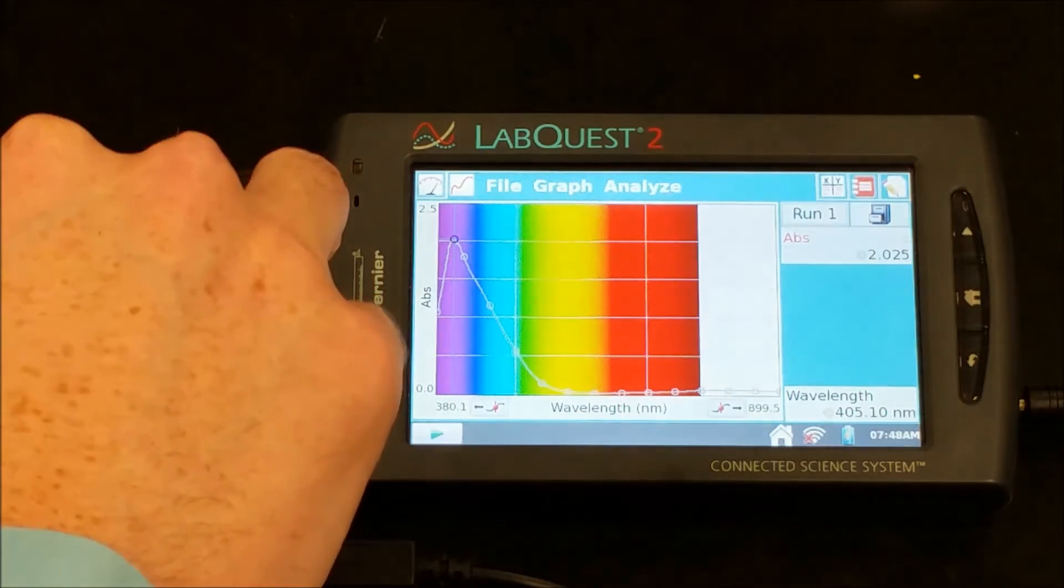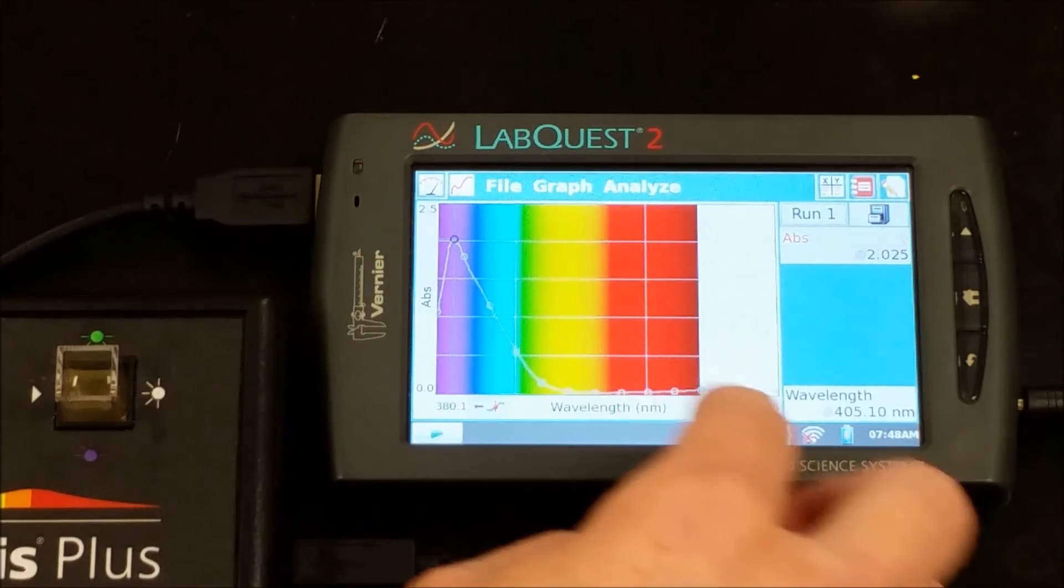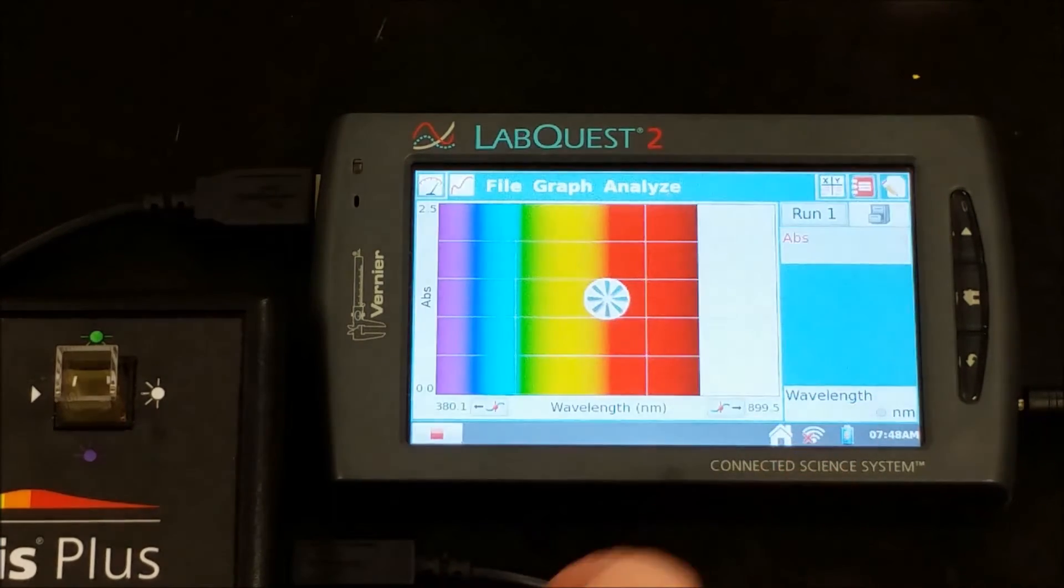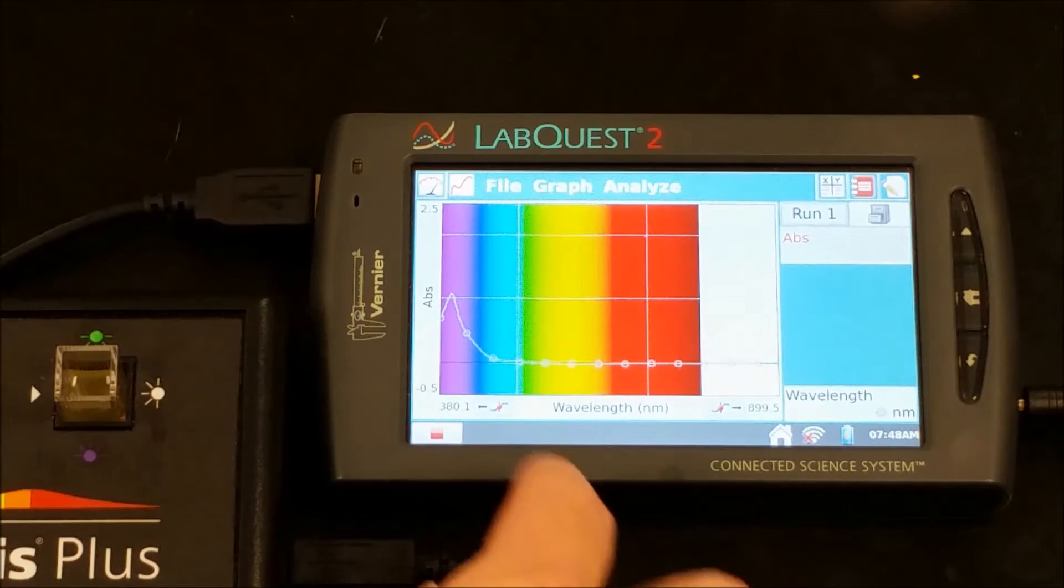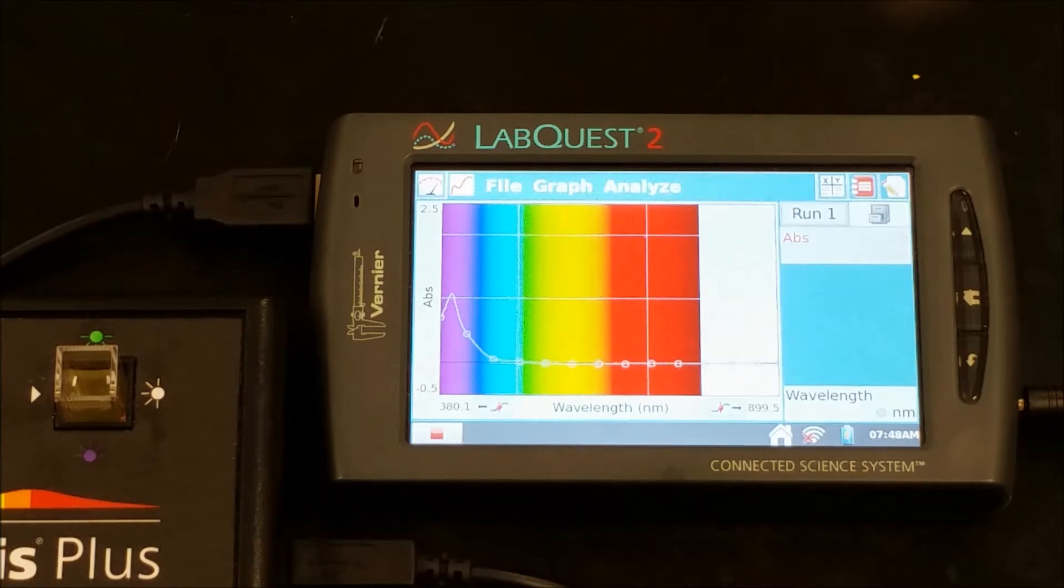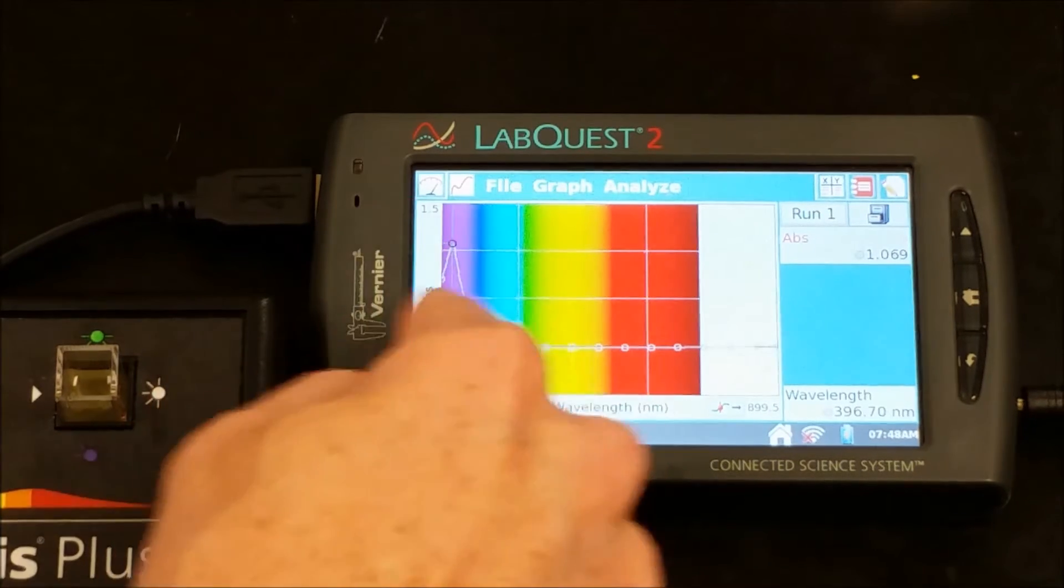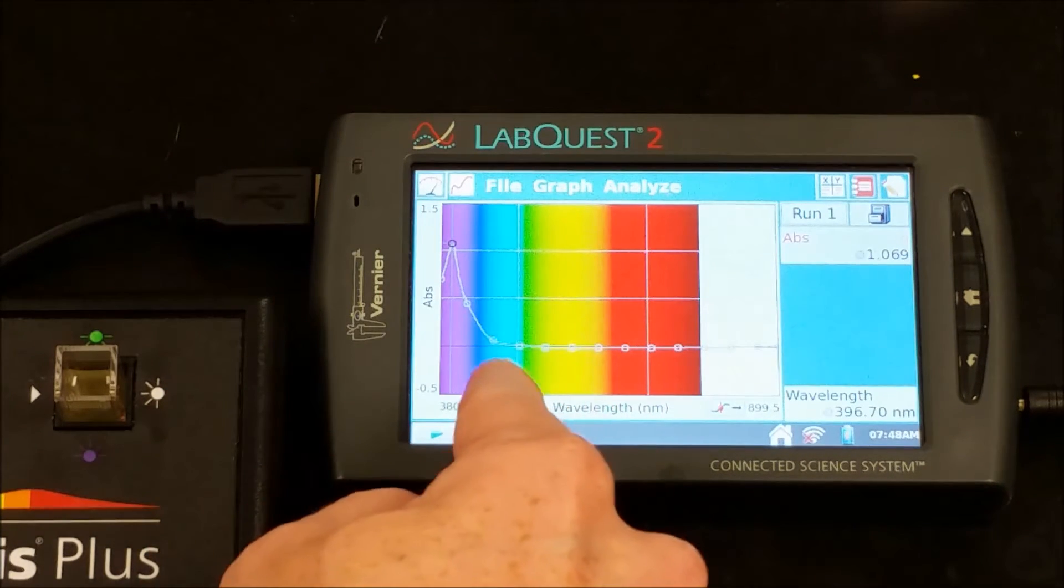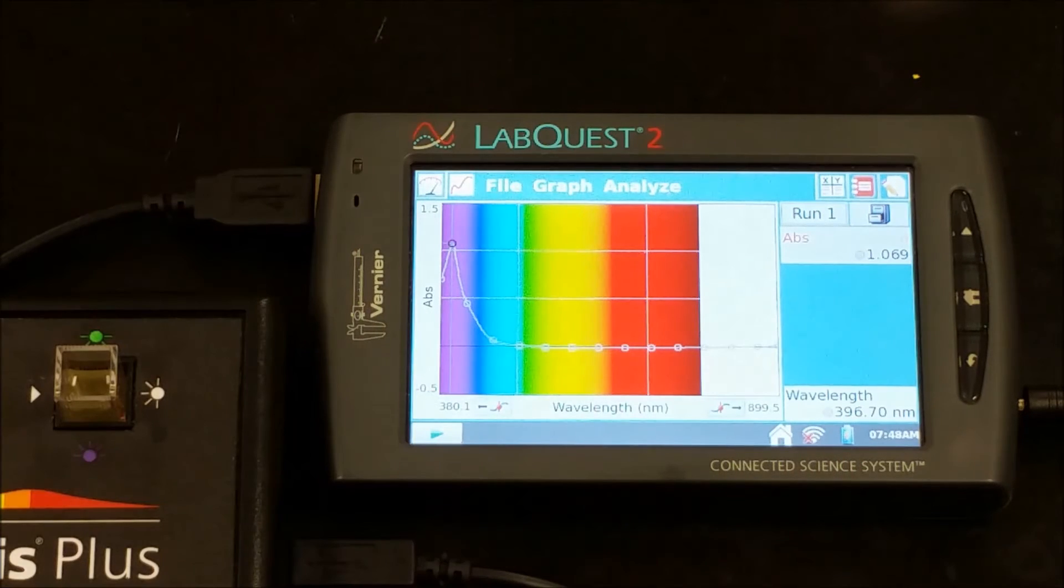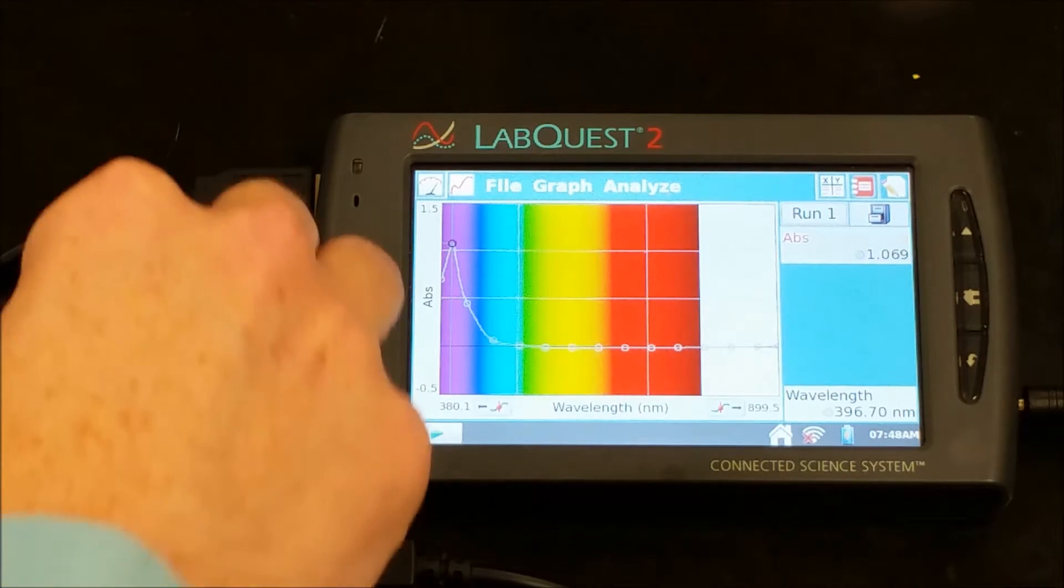We'll take that out and put yellow in. For yellow, this is a little more dilute, so we'll hit stop so we can see it better. We're seeing again a lot of purple being absorbed, some blue, and then really not much of anything else is being absorbed. Everything else is being transmitted through the solution.